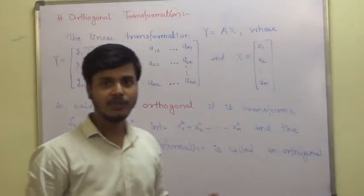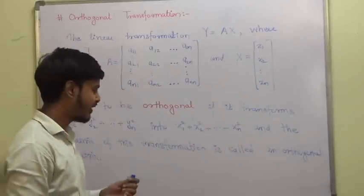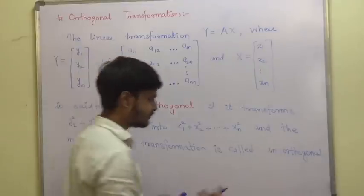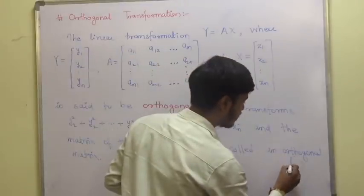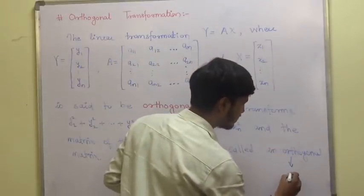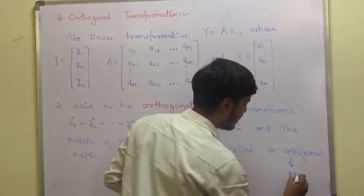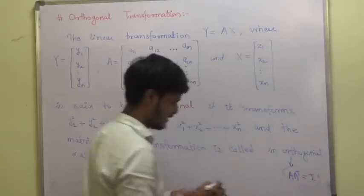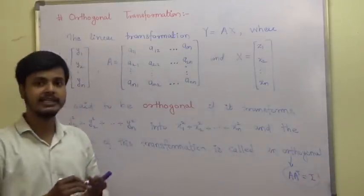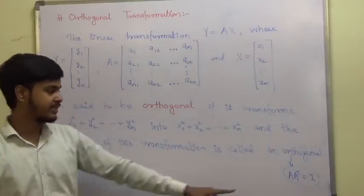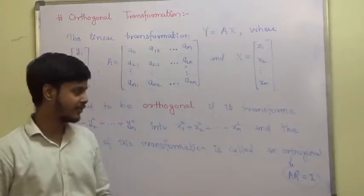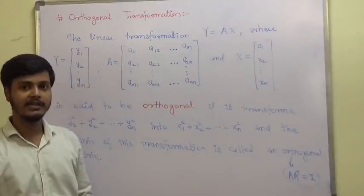We have seen what an Orthogonal Matrix is. An Orthogonal Matrix means A · A^T = I. This is the definition of Orthogonal Matrix.